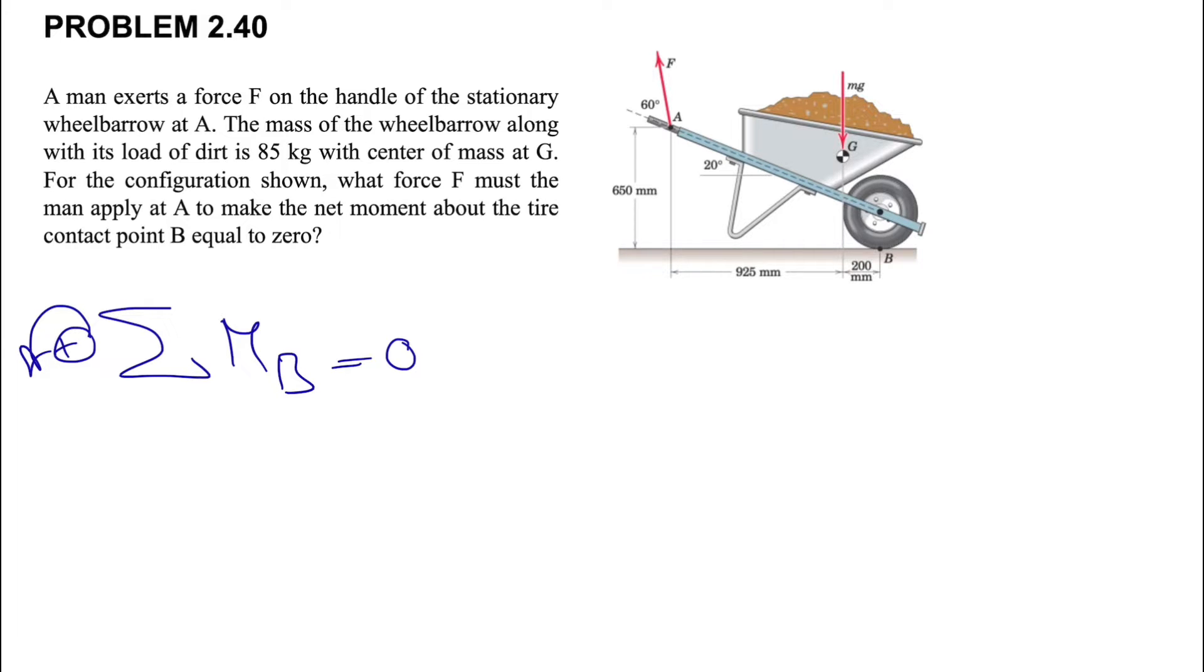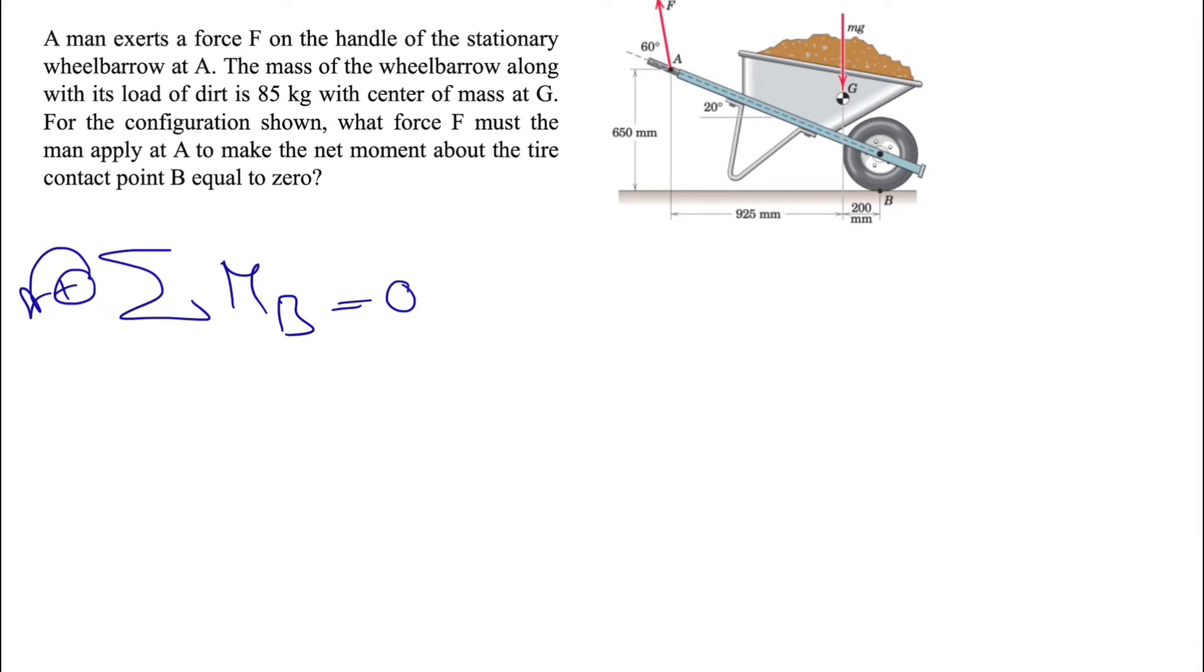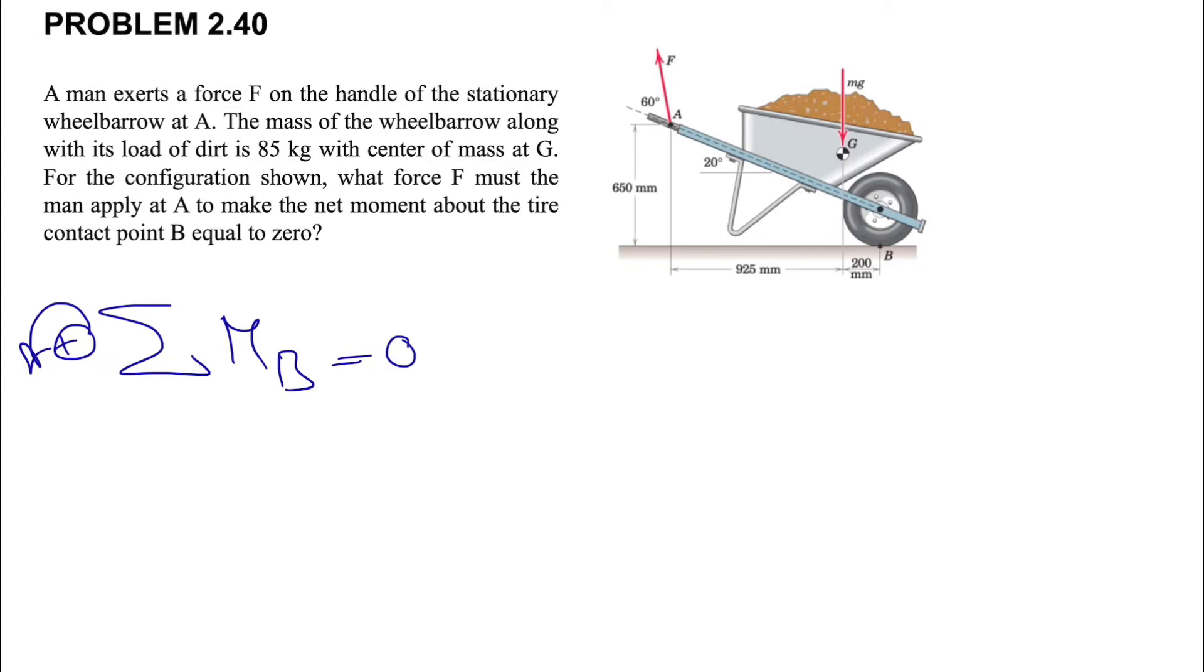At the end of this we need to find the sum of all moments about point B equals zero, and we're going to call counterclockwise positive. But before that, we're going to start with the free body diagram.